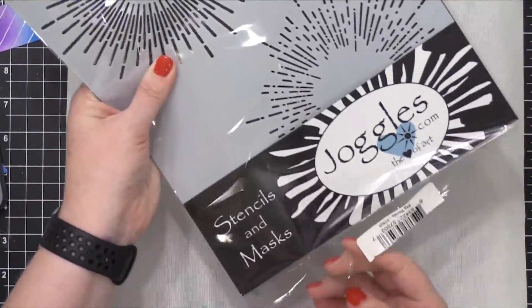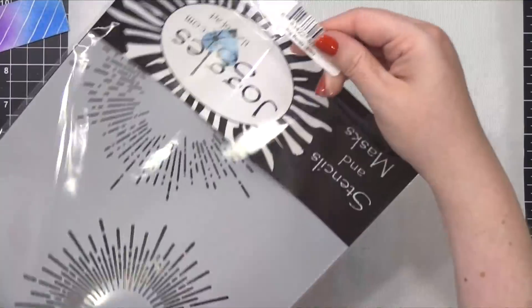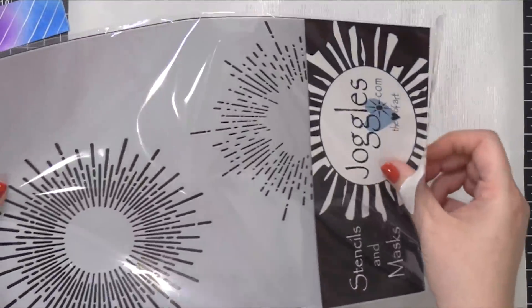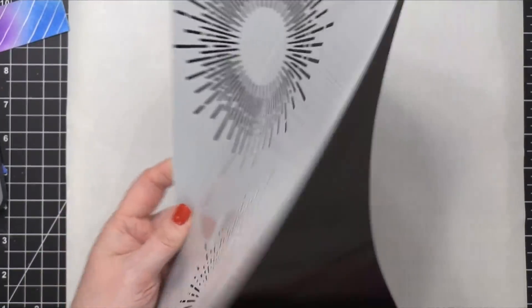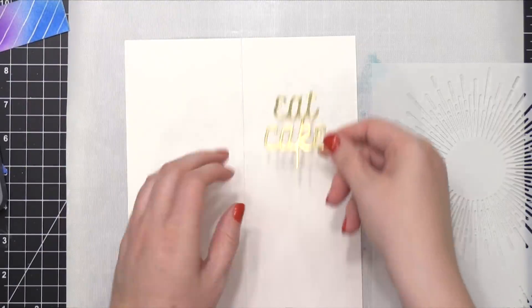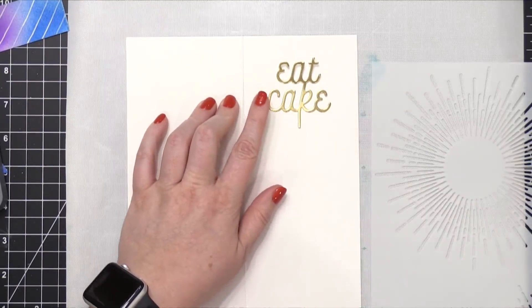So now I'm gonna use this stencil from Joggles. And this is the Big Burst stencil. I've had this stencil for a long time, and it's kind of been out of stock, and then in stock just briefly, and then out of stock again over at Simon.